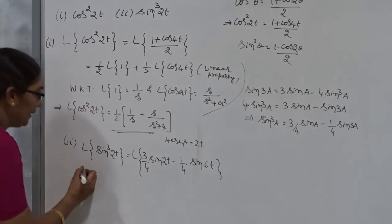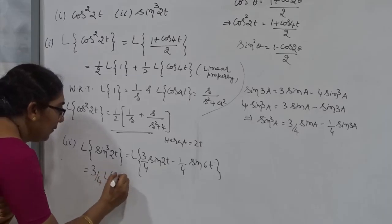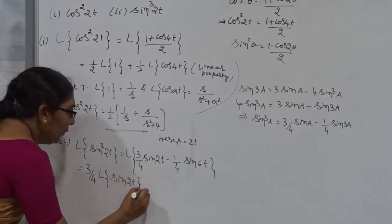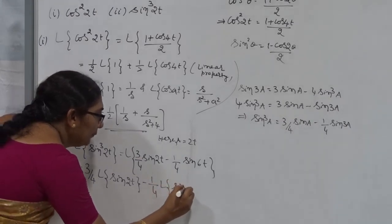Now, I am going to obtain linear property: 3 by 4 Laplace Transform of sine 2t minus 1 by 4 Laplace Transform of sine 6t.